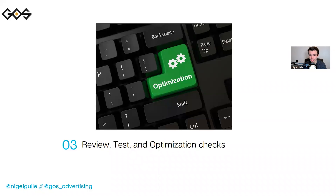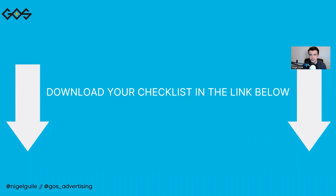Number three is as simple as review, test, and optimization checks. You need to know what should be done every 48 hours, 72 hours, every week, every month, and every 90 days. You can do that by clicking the link at the bottom of this video to download our Google Ads checklist. My team and I use this checklist every single day to make sure that our campaigns are optimizing at their max potential.